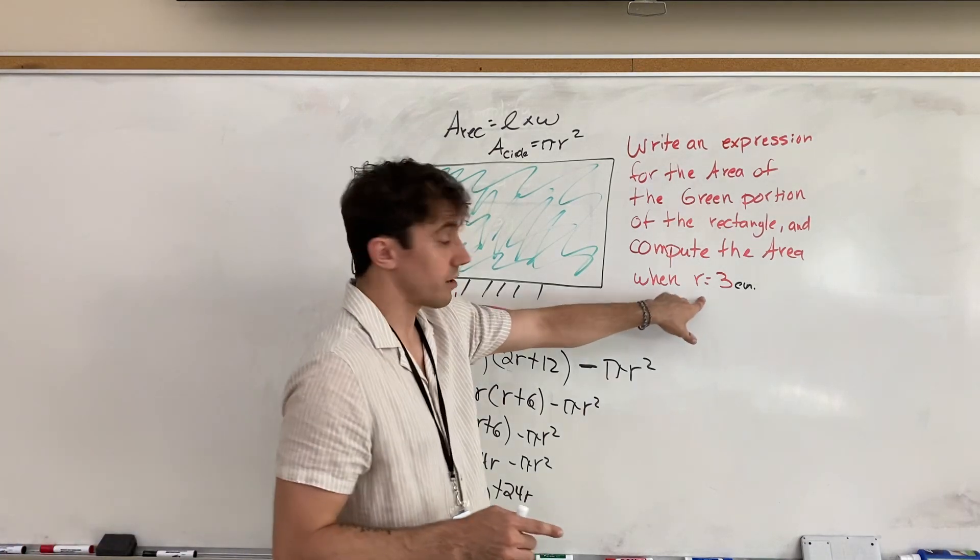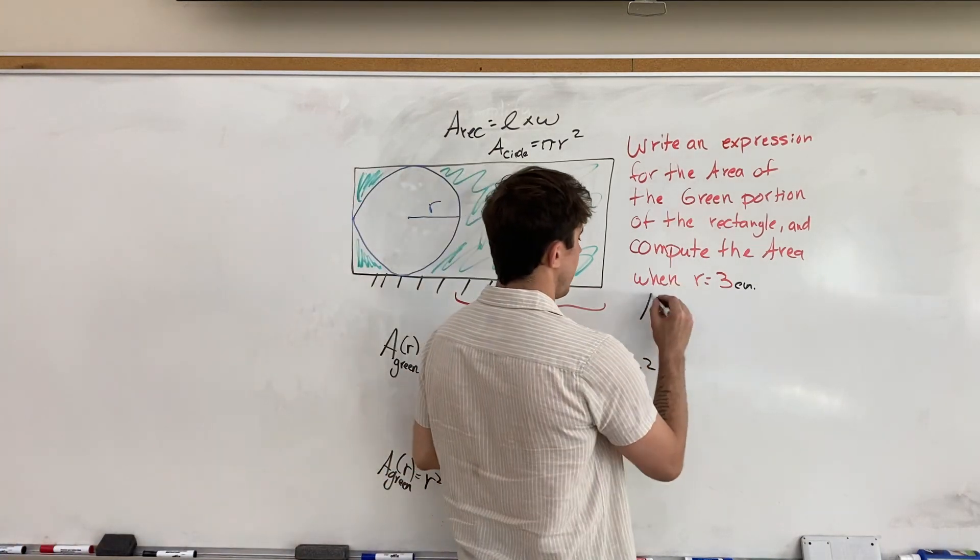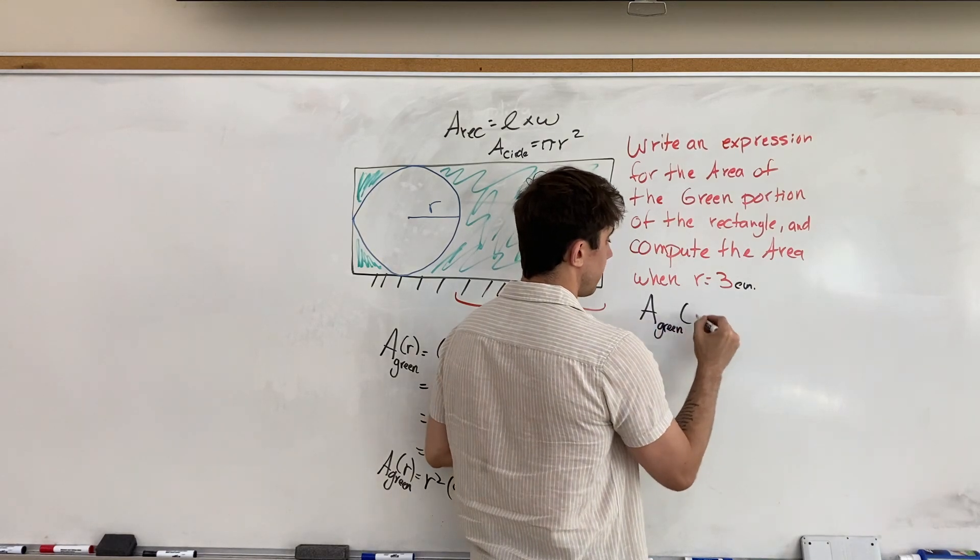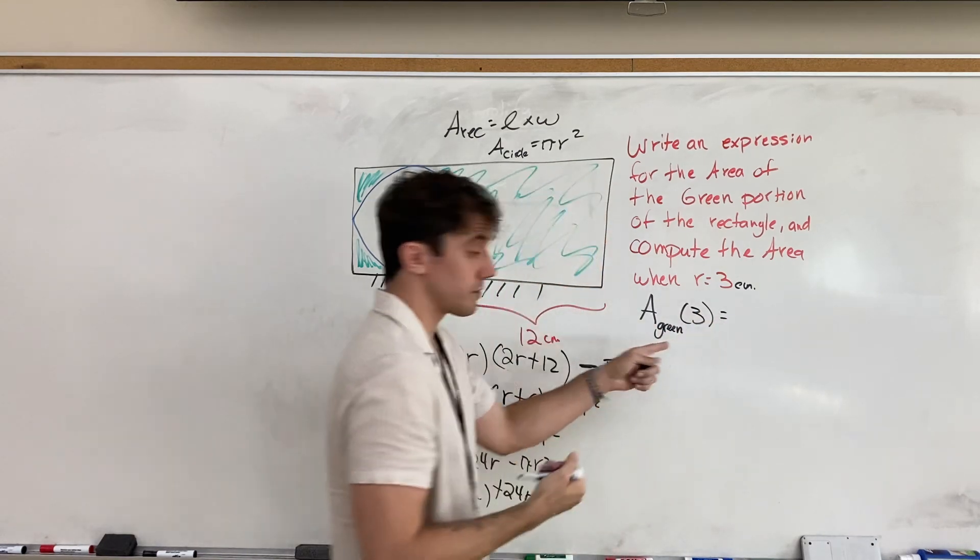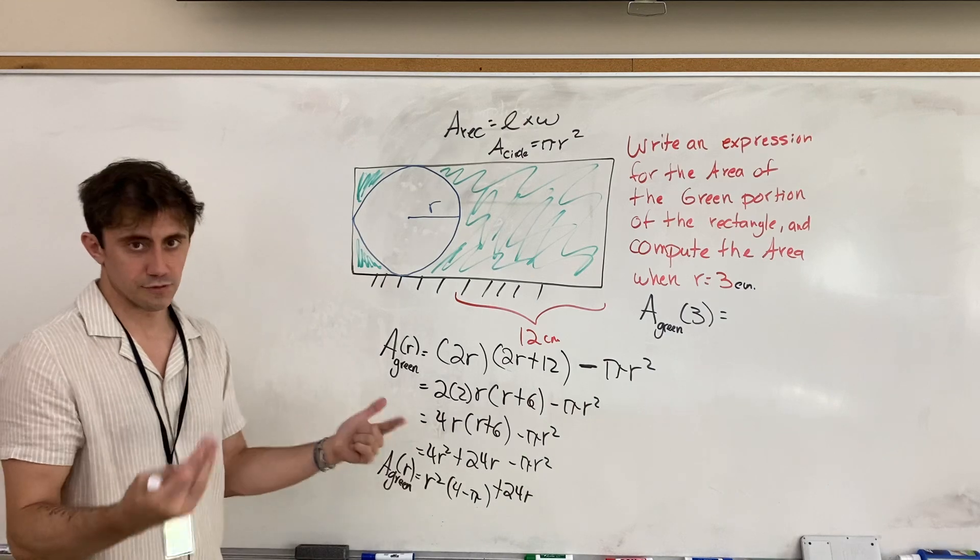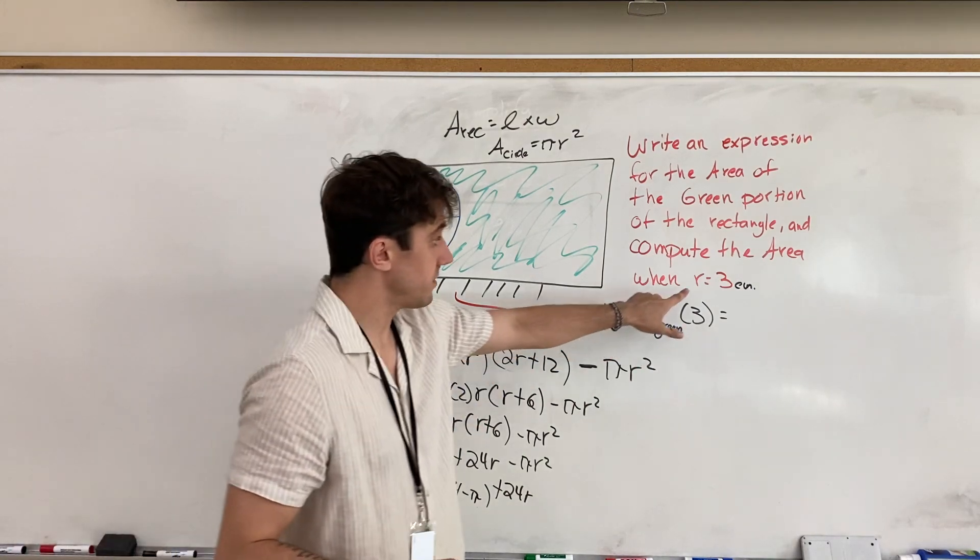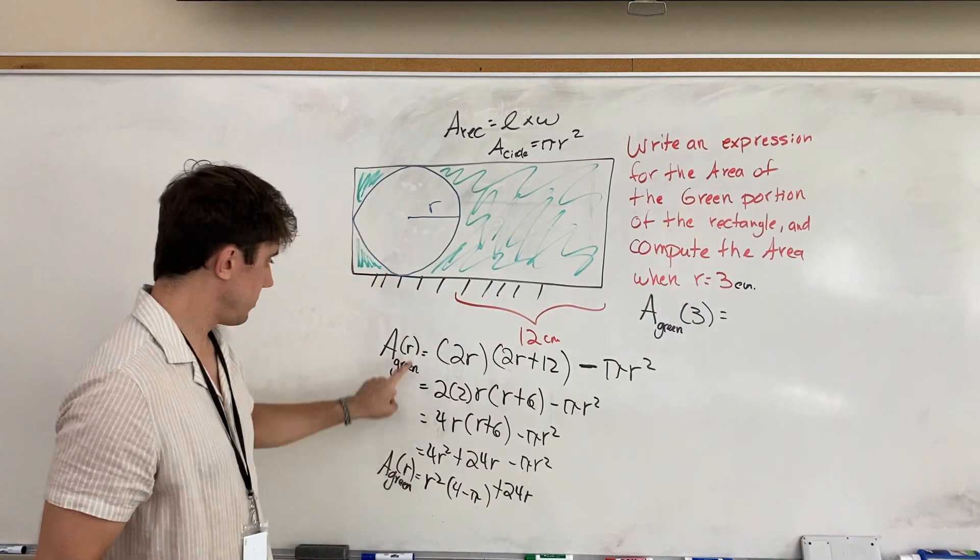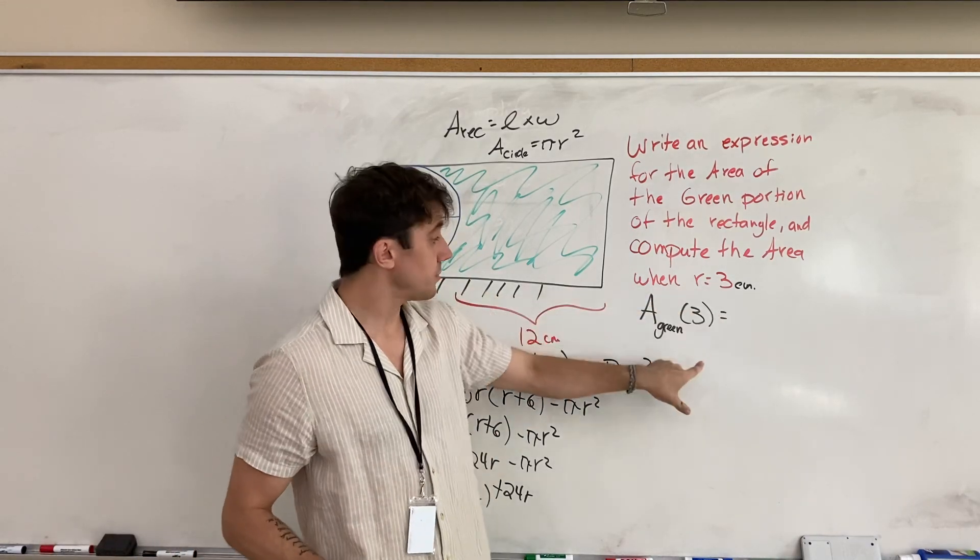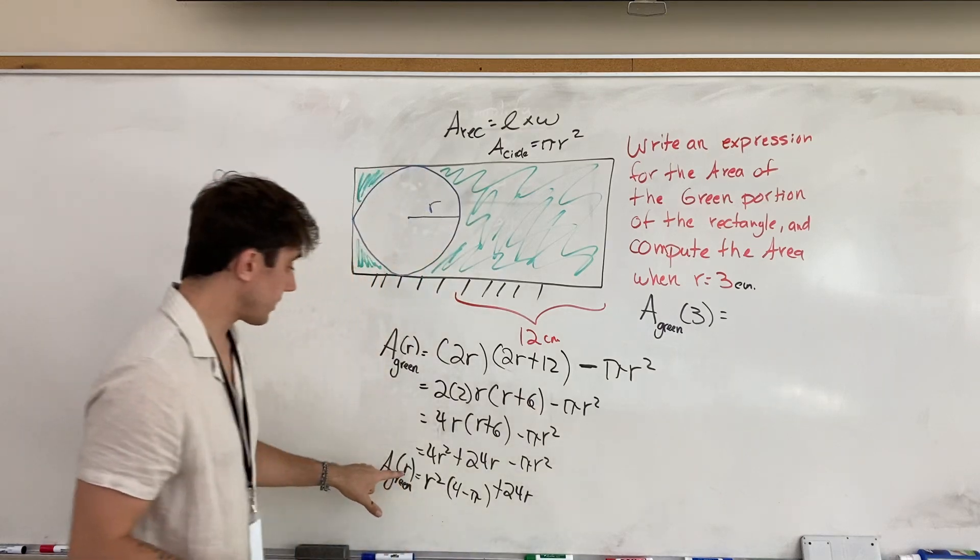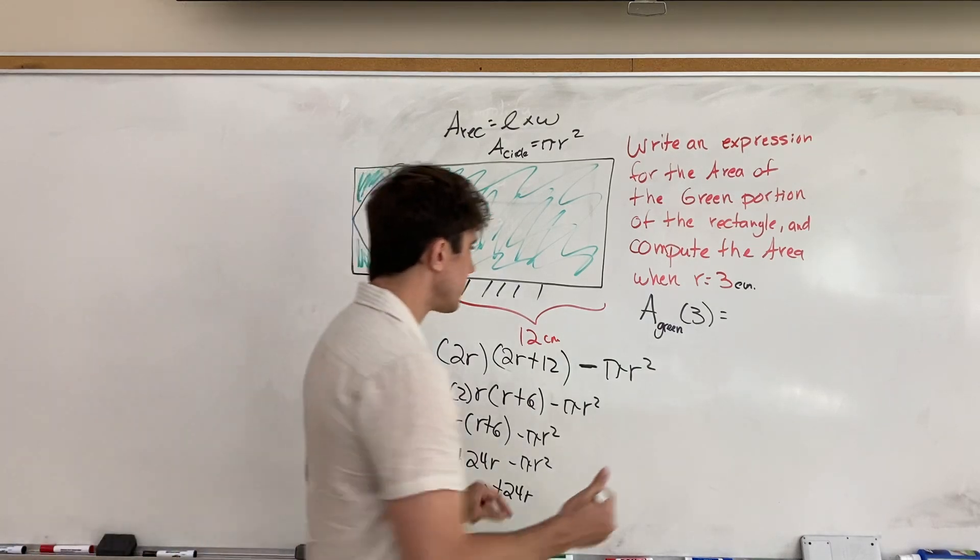So, now, when r is equal to 3, then we can write this as A green of 3, not times through, but again, using function notation, which you've been familiarized with by now. A of 3, that is when r takes on the value of 3, we have A of 3.